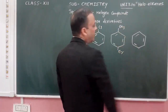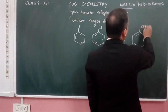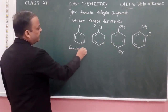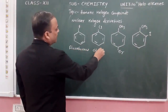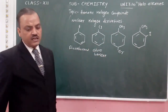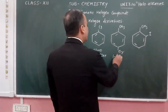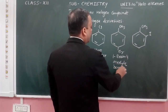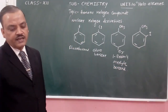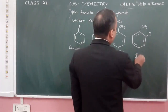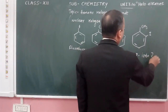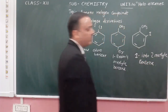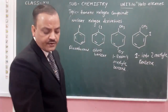Through this, substituted products we will get. Now what will be the names of these compounds? First, chlorobenzene. Another one, 1-bromobenzene, 1-iodobenzene — these are the derivatives included in this.